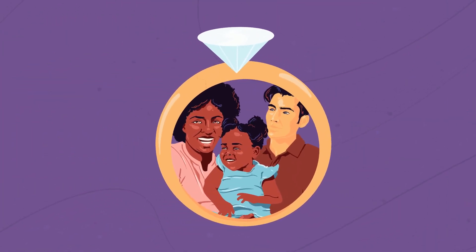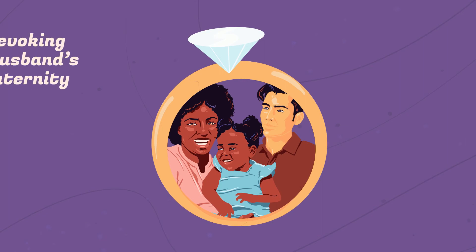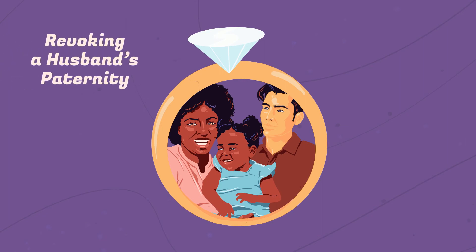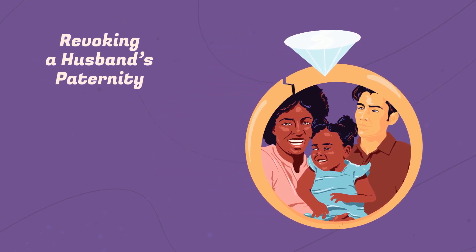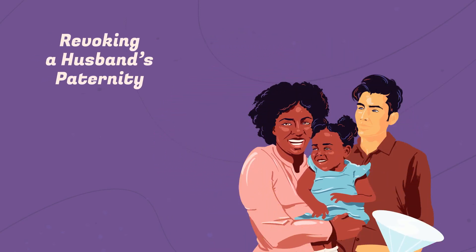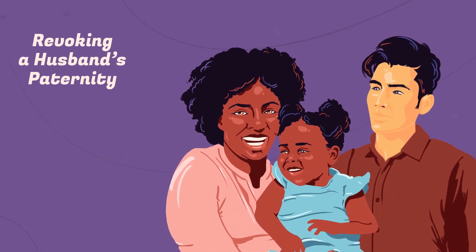Finally, the third way is if the mom is married — her husband is legally presumed, meaning assumed, to be the biological dad. If he is not the biological father, then you'll need to revoke his paternity so that it can be established for the biological father. This usually comes up in the context of a divorce case or some other existing case.